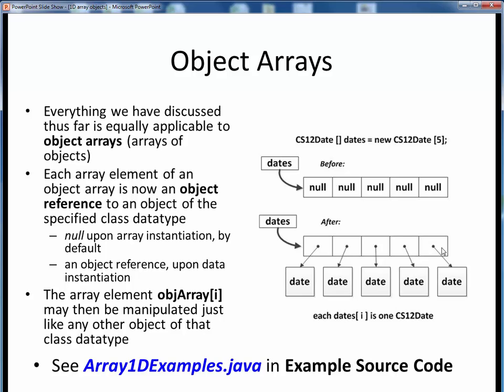As with any other array, each array element, date sub i, is itself one CS12 date object. And we can do to this indexed element anything we could do with any other regular CS12 date object. We could print it, get its month, set its year, and so forth.